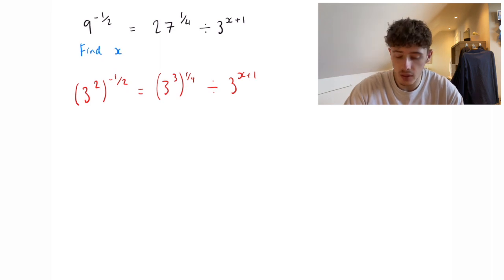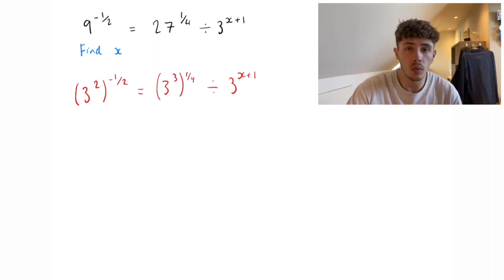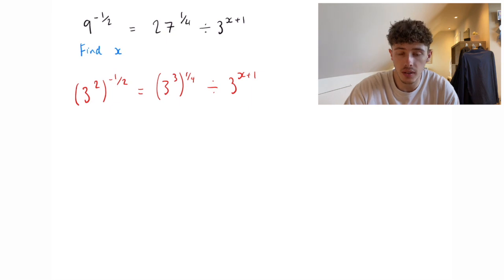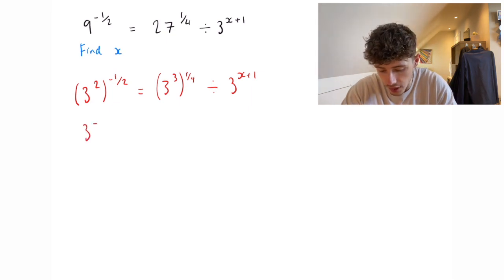The benefit of doing this is we can now write them all as single powers of 3. One of the indices laws is that you multiply the powers when you have that bracket. So 2 multiplied by minus a half is 3 to the minus 1.